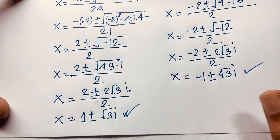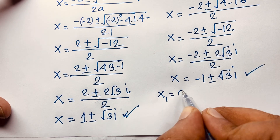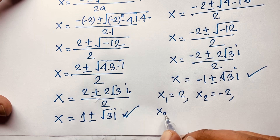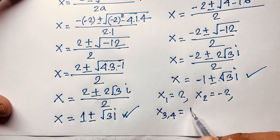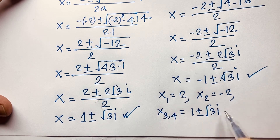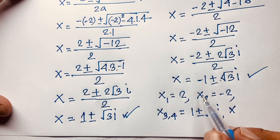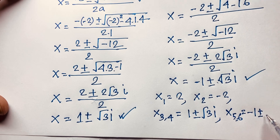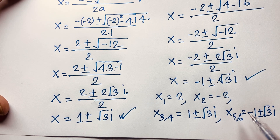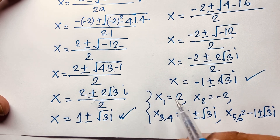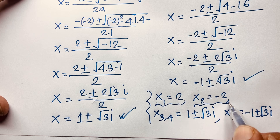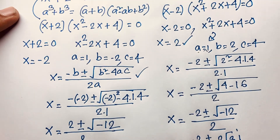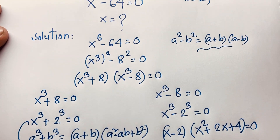So all 6 solutions are: x₁ = 2, x₂ = −2 (both real solutions), x₃ = 1 + √3·i, x₄ = 1 − √3·i, x₅ = −1 + √3·i, and x₆ = −1 − √3·i (four complex solutions). Thank you all. If you enjoyed this video please subscribe to my channel for other interesting videos. Goodbye, take care.